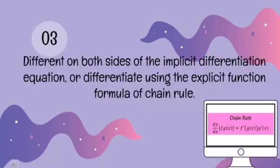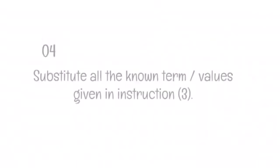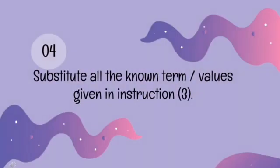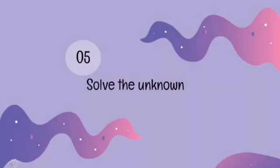For step number three, we need to differentiate both sides of the equation implicitly, using the chain rule. Step number four, substitute all the known terms or values given in step three into our calculation, and we are done.